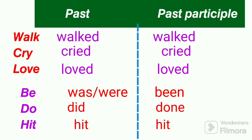But if we look into the next three verbs, we can see that they are not changing by any regular pattern. They are changing in irregular patterns. So they are called irregular verbs.